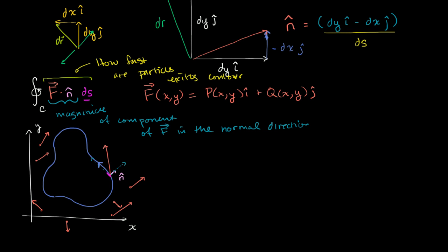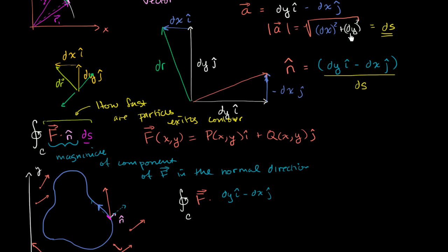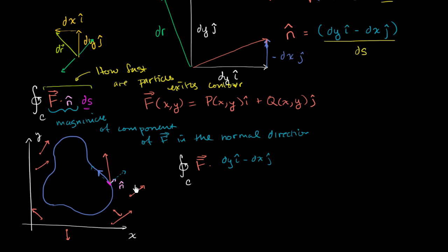Now that we have a decent conceptual understanding of what this could represent, let's play around with it a little bit — especially because we know how to define a normal vector. Let's rewrite it using what we know about how to construct a normal vector. The normal vector we can write as dy·i minus dx·j, divided by its magnitude — which is √(dx² + dy²), the same thing as ds. So we divide by ds and then multiply times ds, and those two things cancel out.